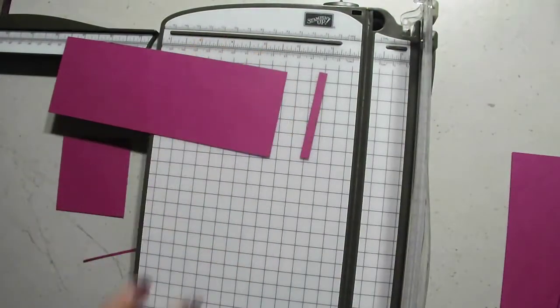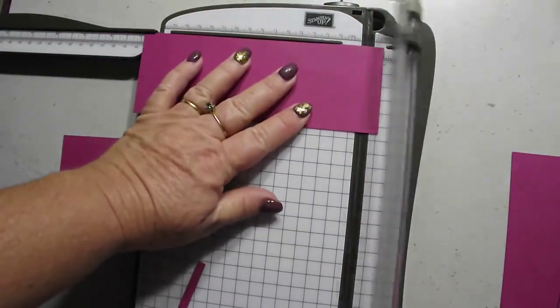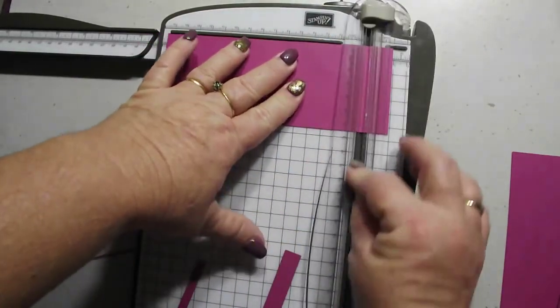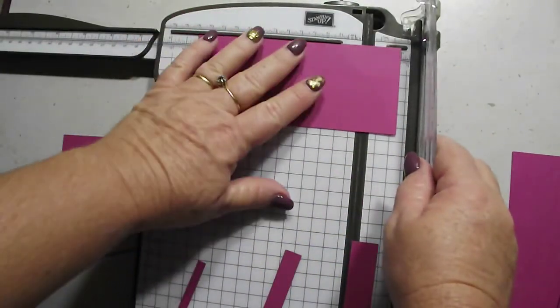We can take it over to the 1/4 inch mark and cut it. And you can get a beautiful 1/4 inch strip of cardstock. Same thing goes right up to if we needed a 1/2 inch one, if we needed a 3/4 inch one, or a 1 inch.